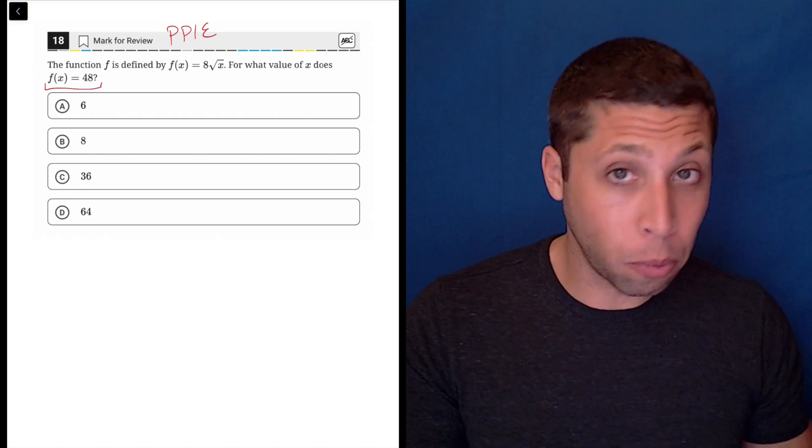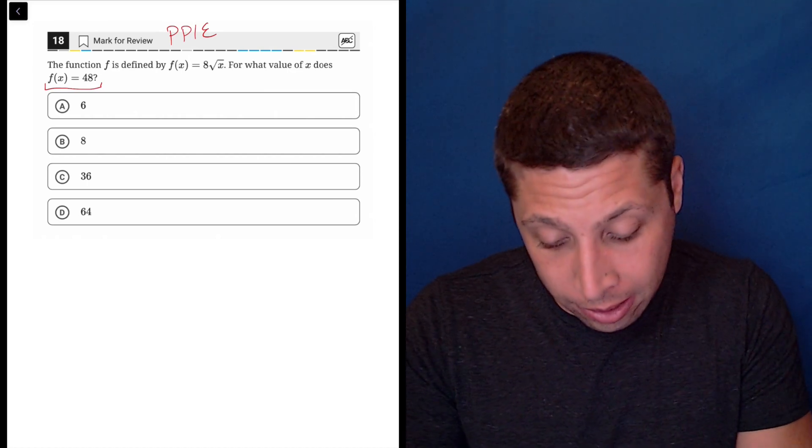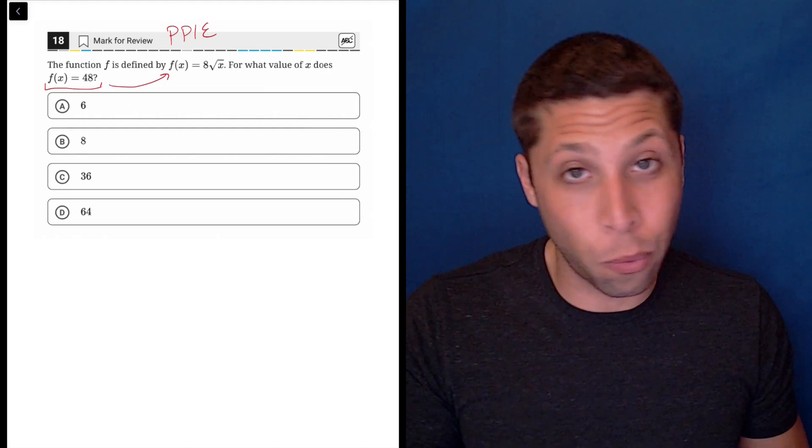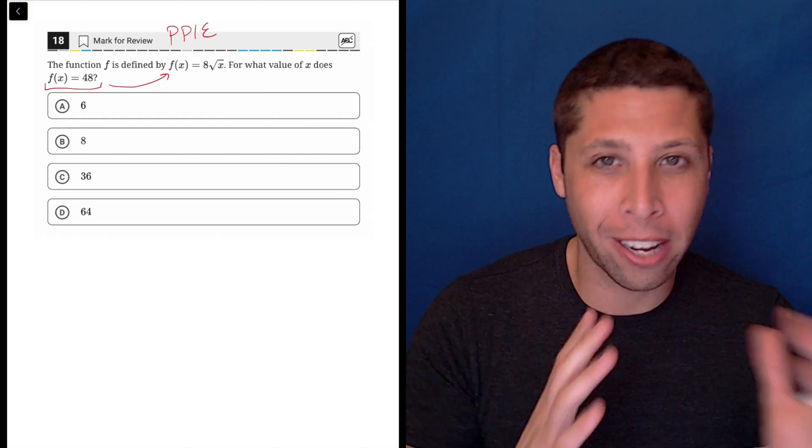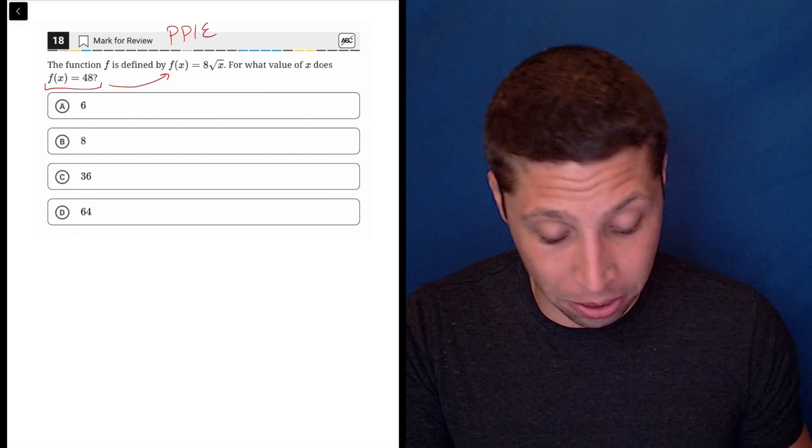And so there are a couple of ways to handle this. I would just say, let's plug this in for the y component. Now I know there is no y there, but you have to be able to move between x and y's and function notation pretty seamlessly.